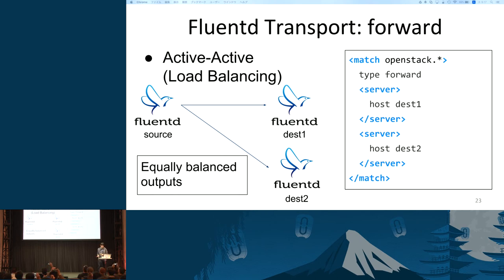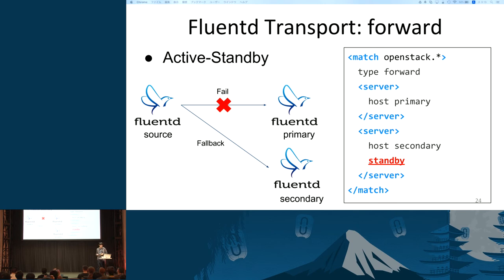In active-active mode, DEST1 and DEST2 are configured as destinations. A Fluentd instance will send logs to DEST1 and DEST2 simultaneously. Outputs are equally balanced — please note that it's client-side load balancing. You can configure active-standby mode by using the standby attribute. When you specify the standby attribute on a server, it is used as the secondary node. In this case, the node named 'secondary' will be used when the primary node fails.